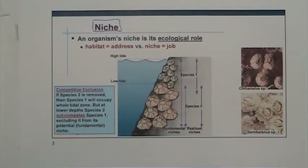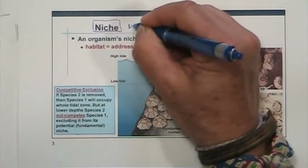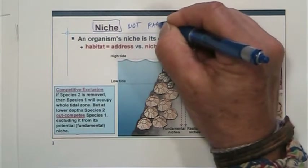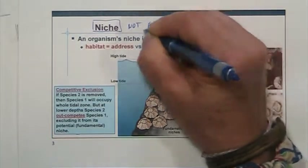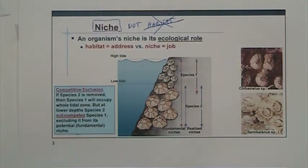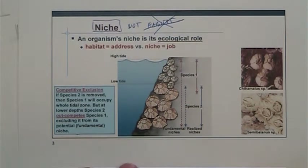Remember when we have more than one species, they are going to be competing for many resources, and not all of them are going to get what they want. So one important concept is the concept of niche, and the niche is really the ecological role of an organism, and includes not just where it lives, but what it does, how it reproduces, and many other aspects. Niche is not the same thing as habitat, so please do not confuse that.